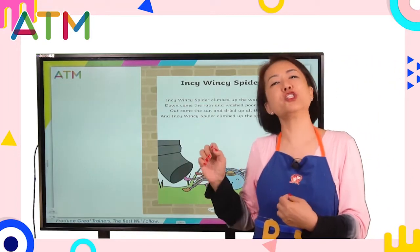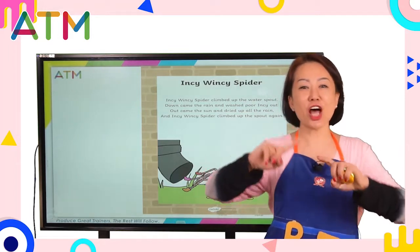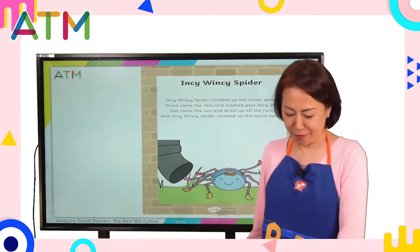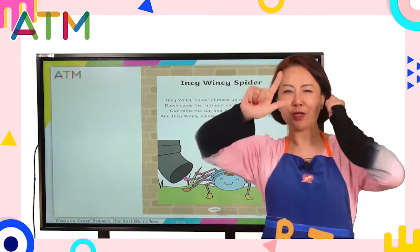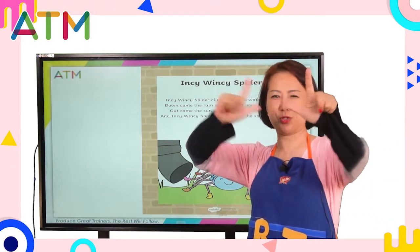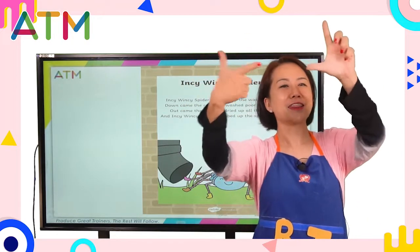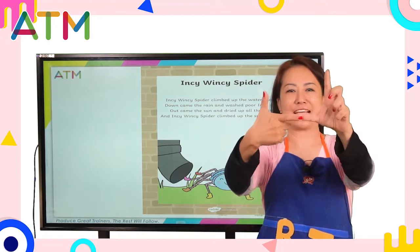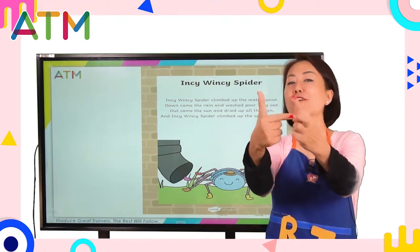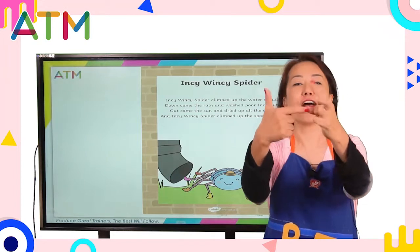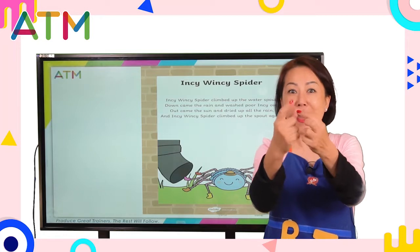Before we start, let's sing a song. First, show me this. Put the pointer and the thumbnail together like this. And we are going to crong, crong, crong, crong. Cross the fingers like a spider.